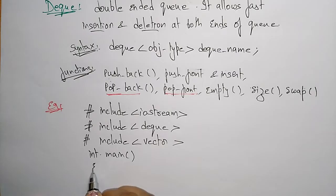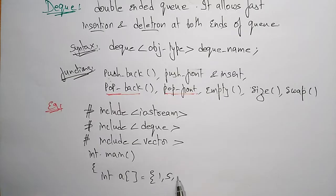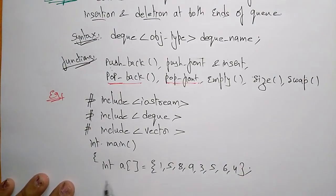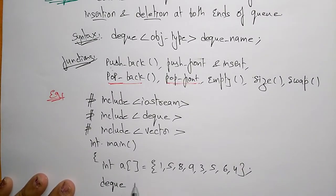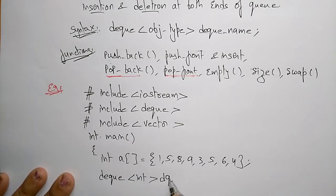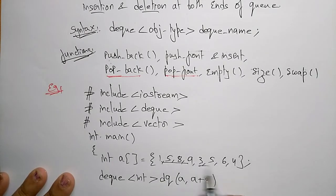In the main function, first take an integer array with elements: 1, 5, 8, 9, 3, 5, 6, 4. Now create a deque — the syntax is: deque<int> dq(a, a+8). Since we have eight elements total, we pass a and a+8.